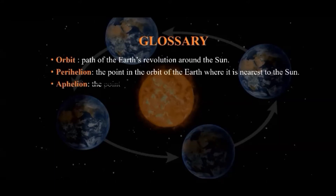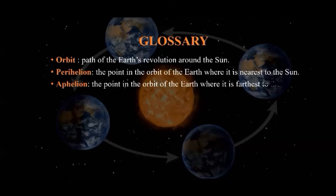Aphelion. Aphelion is the point in the orbit of the Earth where it is farthest from the Sun. That means, aphelion is the point in the elliptical orbit of the Earth where the Earth is farthest from the Sun.